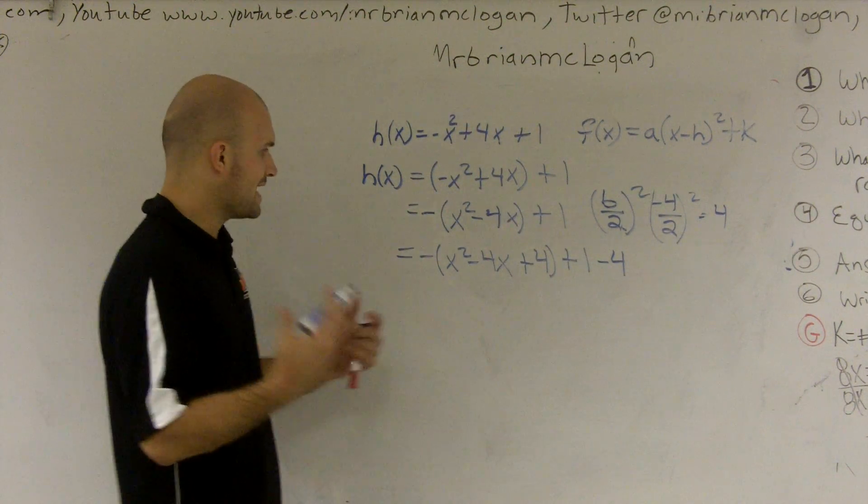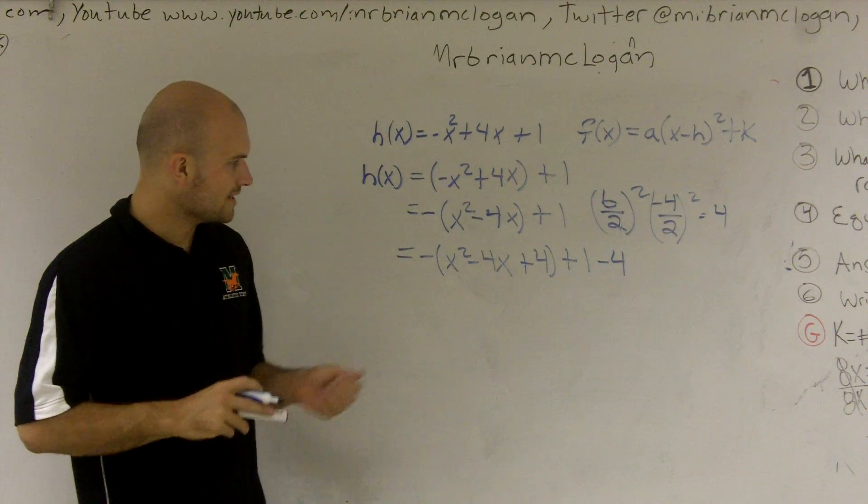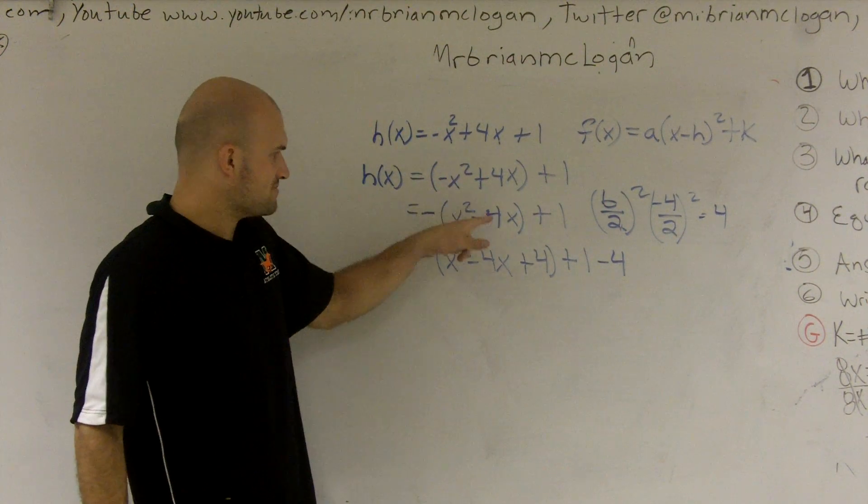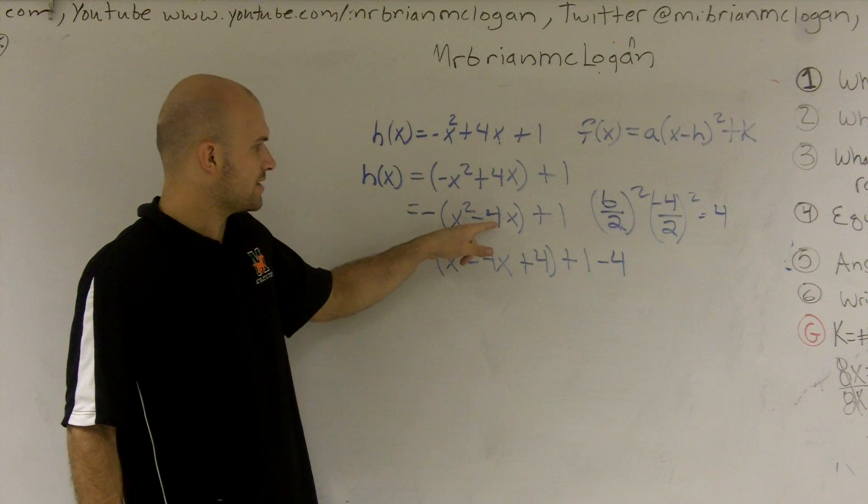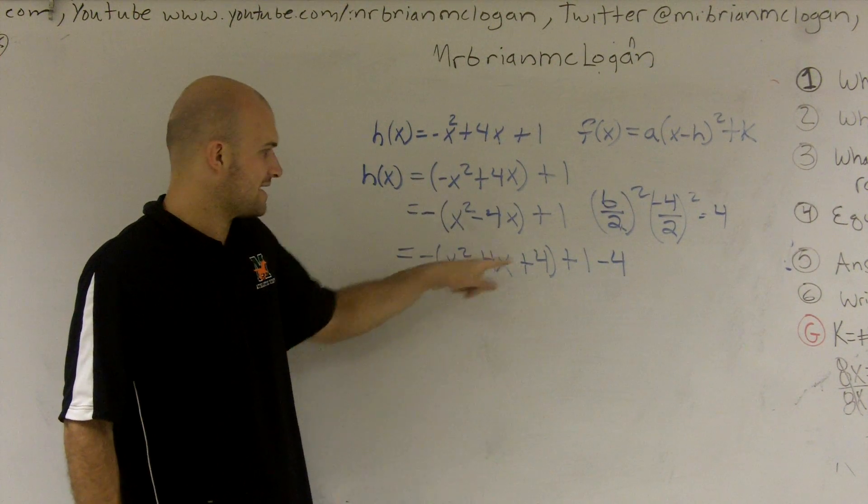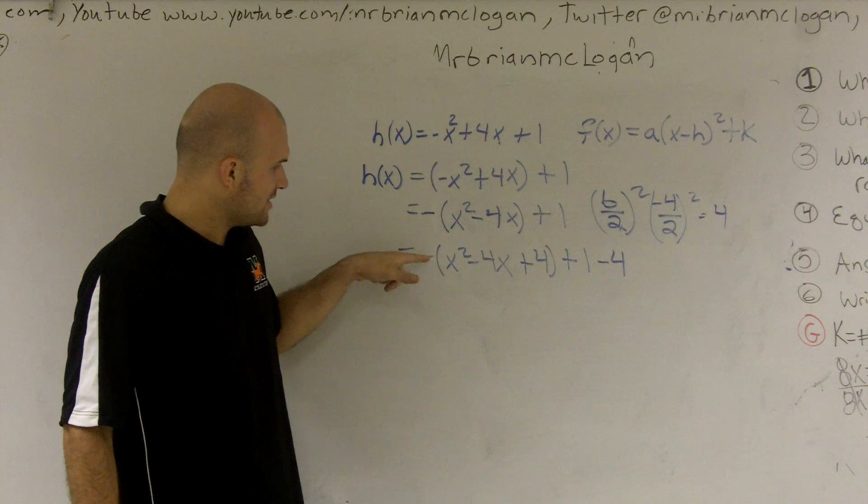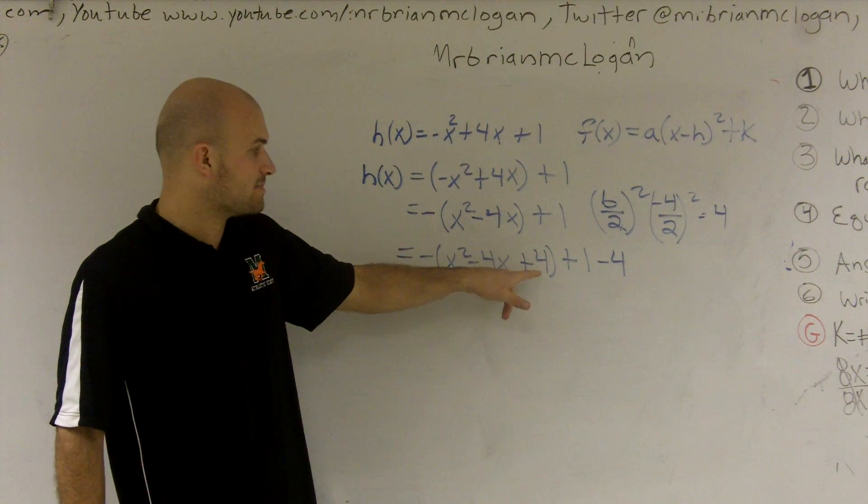Now, here's where the big mistake that a lot of students miss is I multiply. This negative 1 is multiplied by this negative 4x. Right? It's multiplied by everything inside the trinomial. So this is a negative 1 times a positive 4.